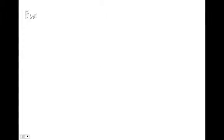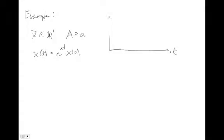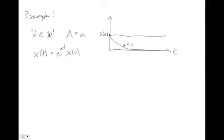Let's do a simple example where x is a scalar (R1) and A is a scalar a. The solution becomes x(t) = e^(at)·x₀. For a less than zero, we get a first-order damped response — x asymptotically decays to zero, which we call a stable response. If a equals zero, x(t) equals x₀ for all time. If a is greater than zero, we get an unstable response where x(t) grows to infinity.